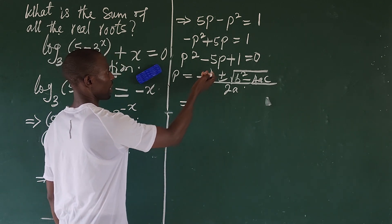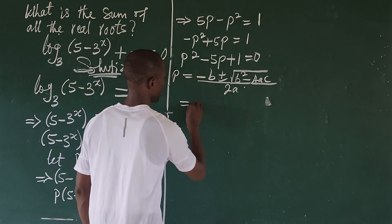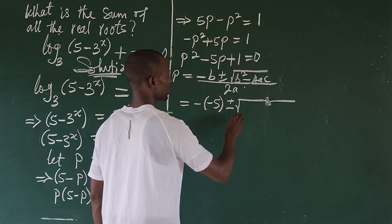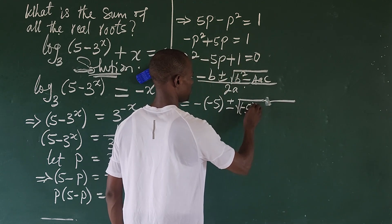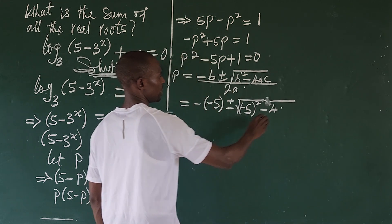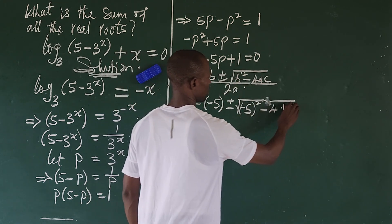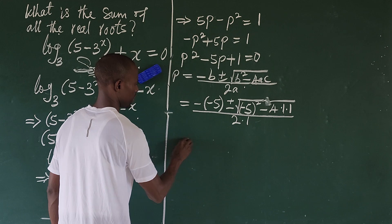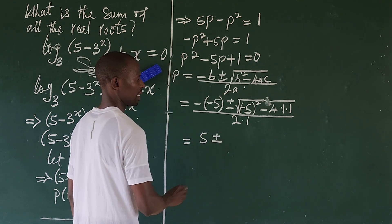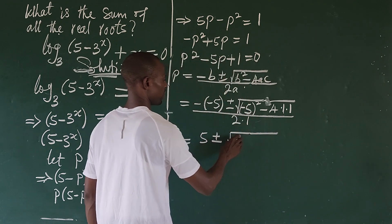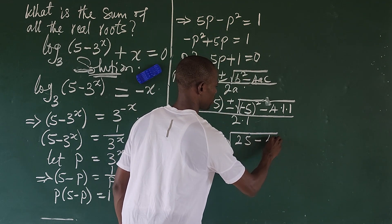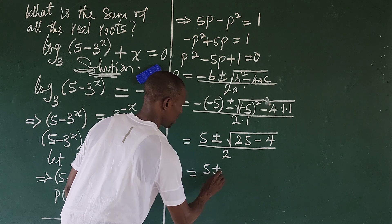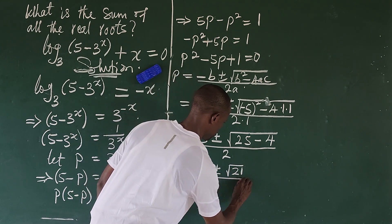So let's substitute. Our b is minus 5, so we're going to have minus bracket minus 5, plus or minus the square root of minus 5 all to the power of 2, minus 4 times a which is 1, times c which is also 1, everything all over 2 times 1. This simplifies to give us 5 plus or minus the square root of 25 minus 4, all over 2, which gives us 5 plus or minus the square root of 21, all over 2.